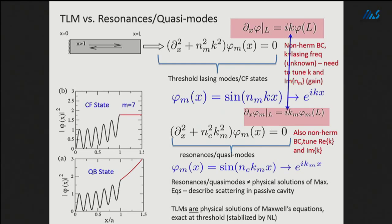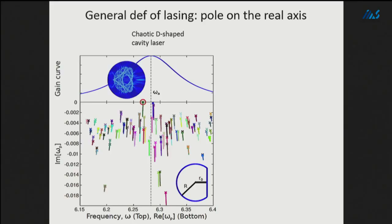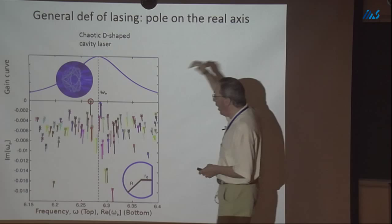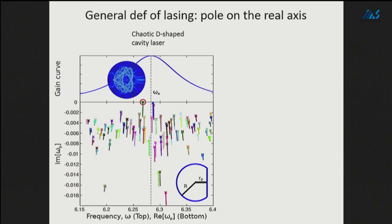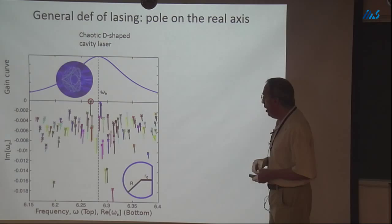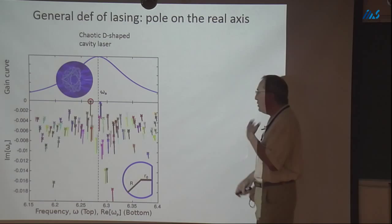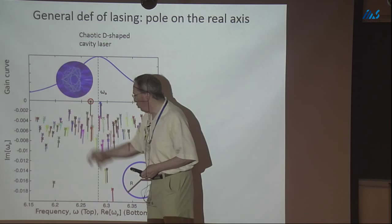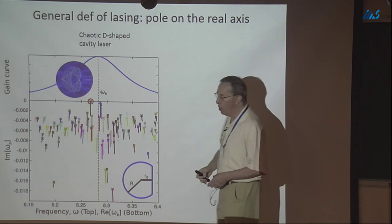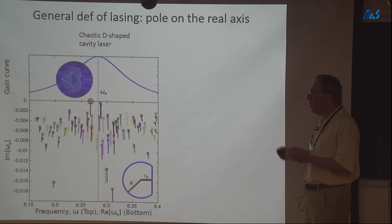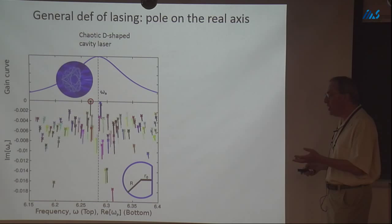This is a completely general description of lasing. I showed you the textbook laser with uniformly spaced resonances becoming poles on the real axis when gain is added. This is a chaotic D-shaped cavity with really complicated pole structure. Some pole wins the race to the real axis given the gain curve assumed — that's the lasing mode. This allows one theory for every type of cavity, rather than reinventing a basis for each new cavity as the laser literature tends to do.